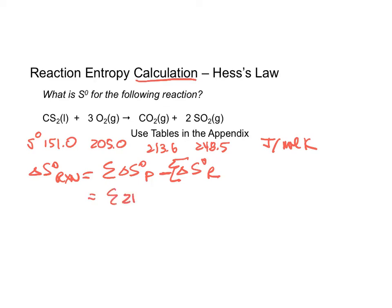For the products, we have 213.6 minus 2 times 248.5. Those are our products. We will subtract from that our reactants would be 151.0, and then we need to multiply the 3 by the 205.2.